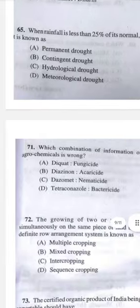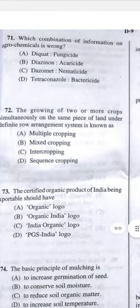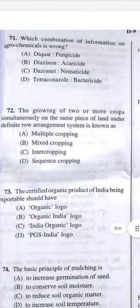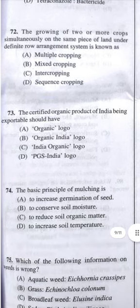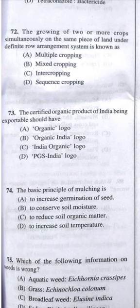Question 71: Which combination of information on agrochemicals is wrong? Answer D — tetraconazole is a fungicide, not a bactericide. Question 72: Growing two or more crops simultaneously on the same piece of land under a definite row arrangement is known as C — intercropping.